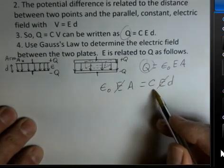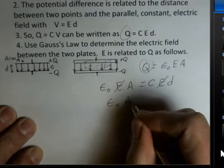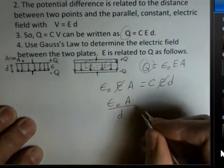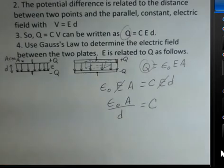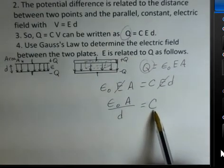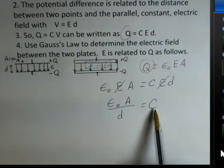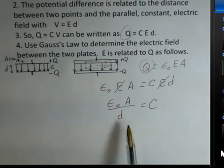And the capacitance, if I divide by d, epsilon naught, the area of the plate, divide by the distance between the two plates, that's our formula for calculating the capacitance for a parallel plate capacitor, does not depend on Q, does not depend on the potential difference between the two plates.